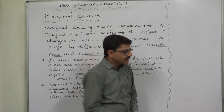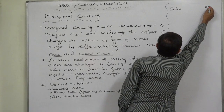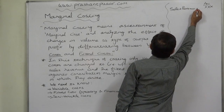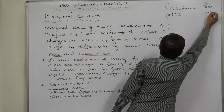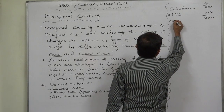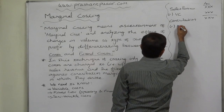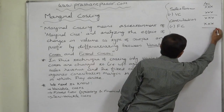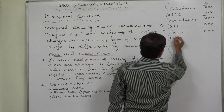Let us summarize what we exactly do in marginal costing. First, we take the amount of sales revenue, from which we write off or charge variable cost. The balancing amount is known as contribution margin. From contribution margin, we write off the fixed cost — or precisely, the operating fixed cost — and ultimately we arrive at profit, that is, operating profit.